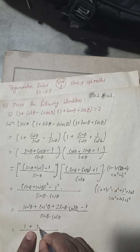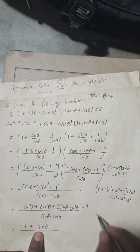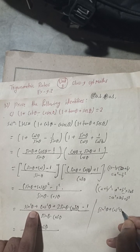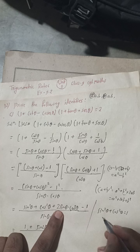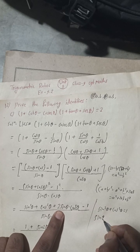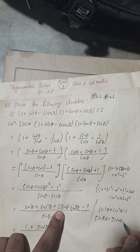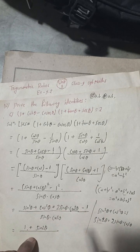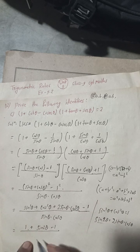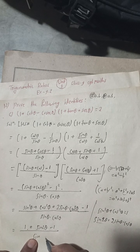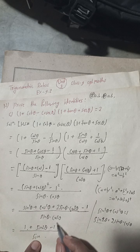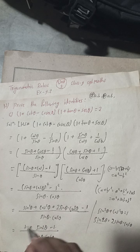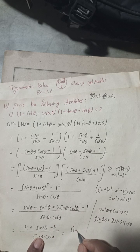Since sin²θ + cos²θ = 1, the 1 and −1 cancel, leaving 2 sin θ cos θ over sin θ cos θ. We also know that sin 2θ = 2 sin θ cos θ, so the expression becomes sin 2θ over sin θ cos θ.